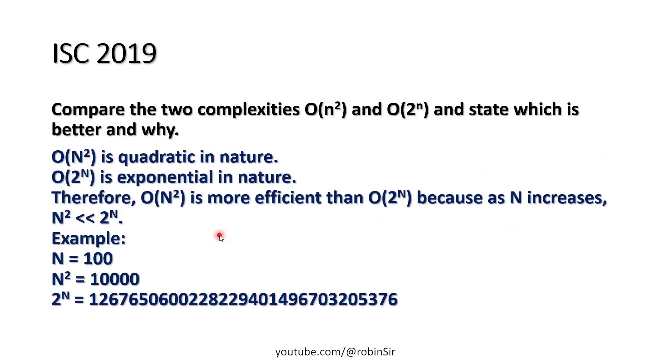Year 2019. One question came. Compare the two complexities Big O N squared and Big O of 2 to the power N, and state which is better and why. So we know that N squared is quadratic in nature, whereas 2 to the power N is exponential in nature. And therefore Big O of N squared is much more efficient than Big O of 2 to the power N, because as N increases, N squared is very small when compared to 2 to the power N.